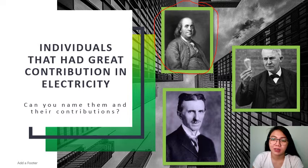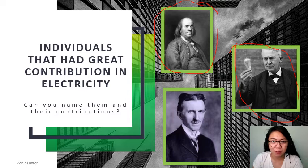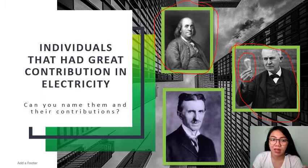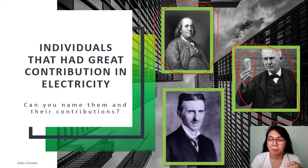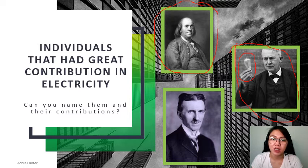Next, we have Thomas Edison. He's famous for the light bulb that he's holding here. After he devised a commercially viable electric light bulb, he developed an electric utility to compete with the existing gas light utilities — because before, lights were lit by gas, but with Edison, electricity was used instead. He founded the Edison Illuminating Company, and during the 1880s, he patented a system for electricity distribution.